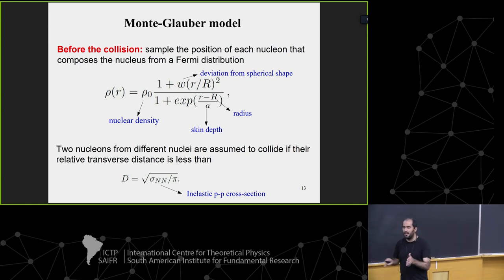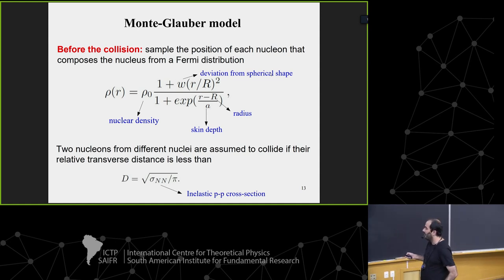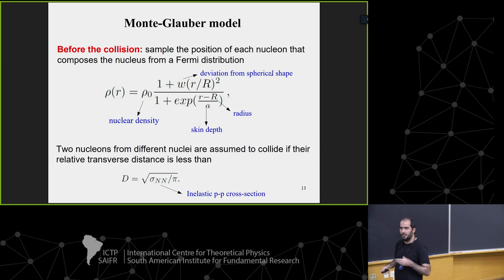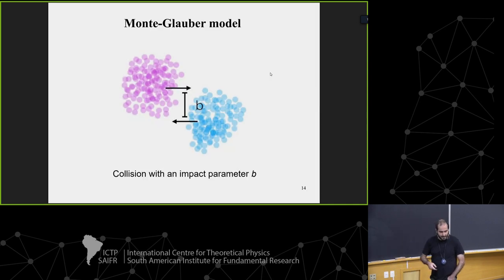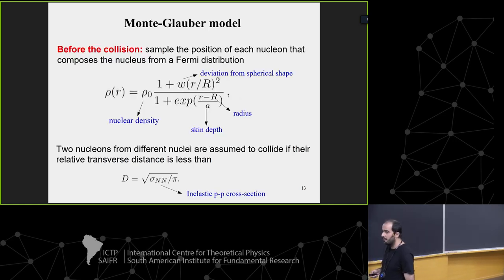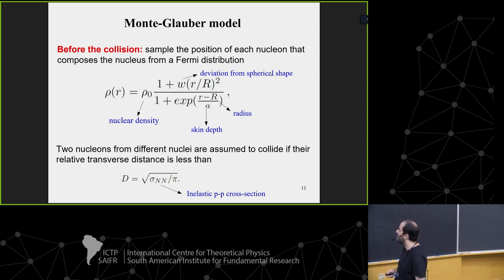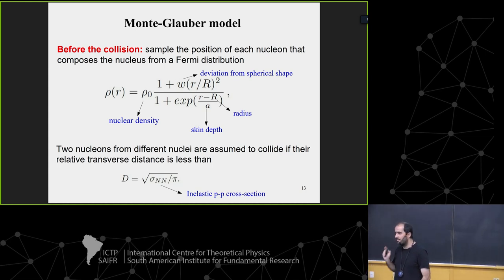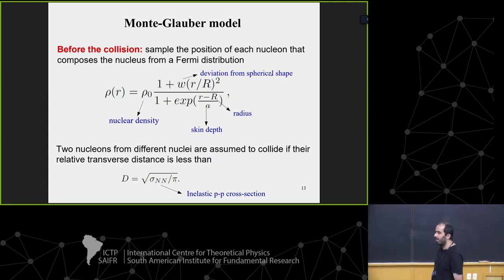We take two sampled nuclei, put them in collision with some impact parameter, and decide if nucleons interact according to the inelastic nucleon-nucleon cross-section — a geometric interpretation where whenever the distance between two nucleons from each target is smaller than a threshold, they interact and produce particles or entropy. There was a question about whether electromagnetic fields would affect this distribution; in principle a large magnetic field generated by spectators could affect the nucleon wave functions, but this is not currently taken into account in any of these models.